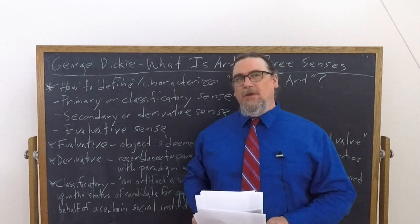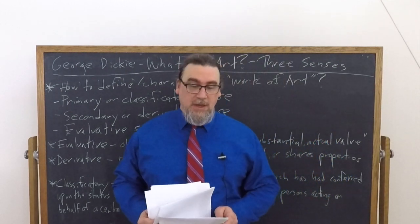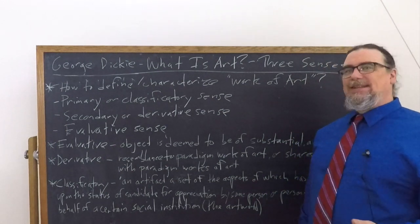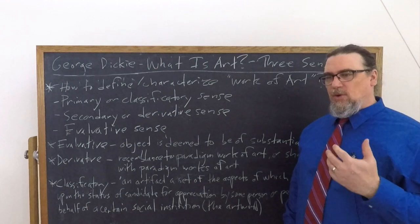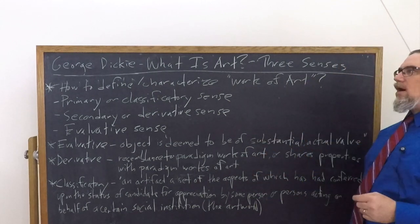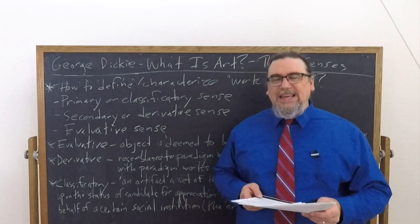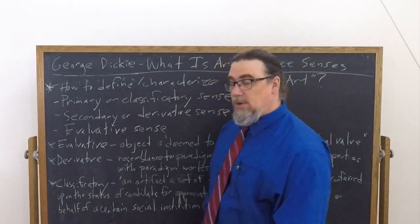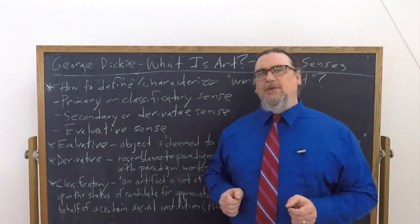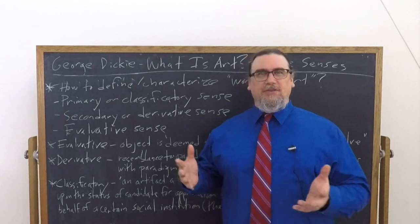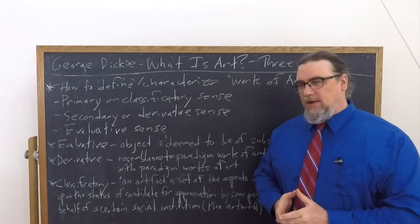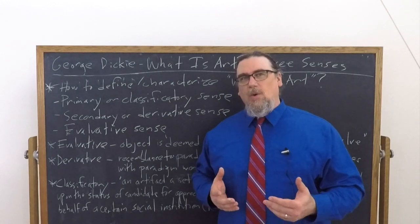One of the very helpful things that George Dickey does in his piece, 'What is Art? Art and Institutional Analysis,' is to distinguish between three different senses — and we might also say three different concepts and associated procedures — for identifying or characterizing or defining what a work of art is. He tells us that there are at least three distinct senses of 'work of art.' Making distinctions is an extremely helpful thing to do whenever we get into a controversial or ambiguous topic.